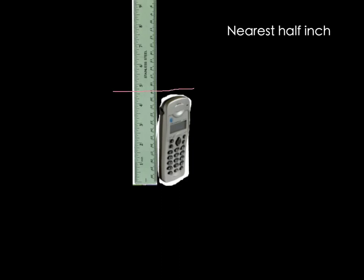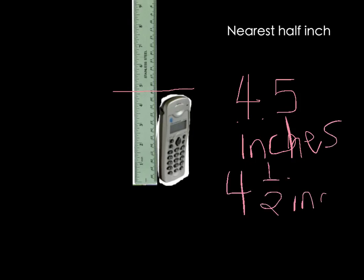So now when I look at that, I can see that the pink line there is closer to the half here than it is to the five or the four. So that would tell me, since it's four but not quite five yet, that this object is 4.5 inches, or four and a half inches. It's the same thing.